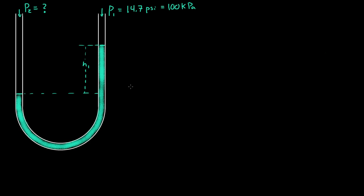For our case we're going to have the outside of the tube open to the atmosphere. So the pressure outside of the tube is 14.7 psi or one atmosphere. One atmosphere is equal to 100 kilopascals, and 100 kilopascals is equal to 100,000 newtons per meter squared.